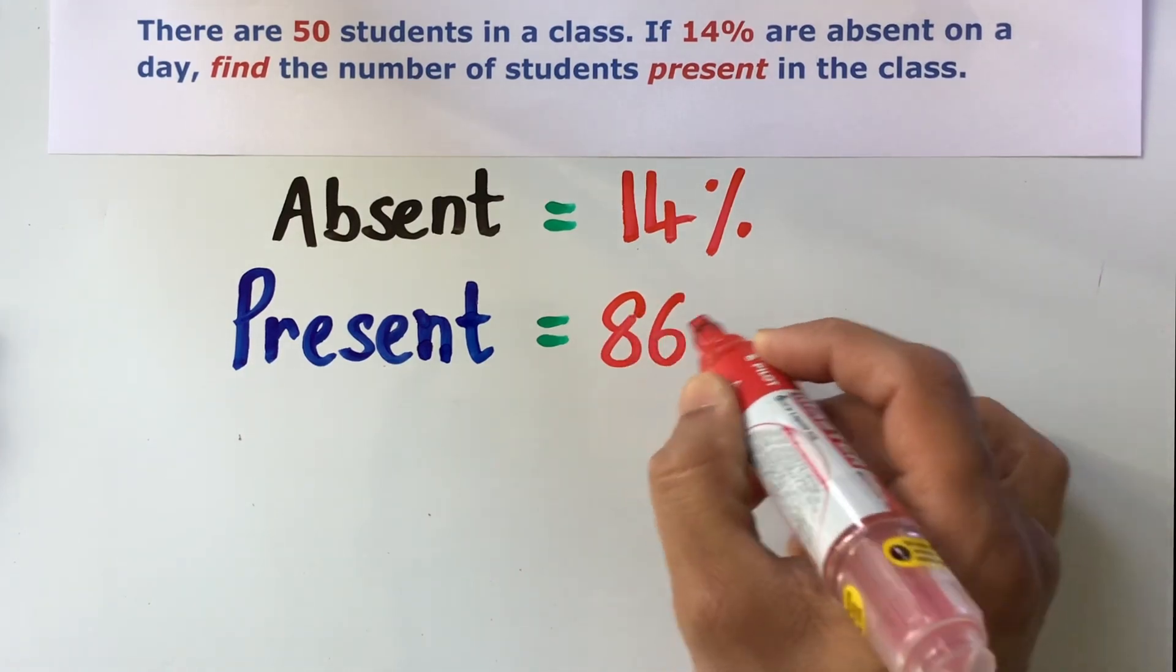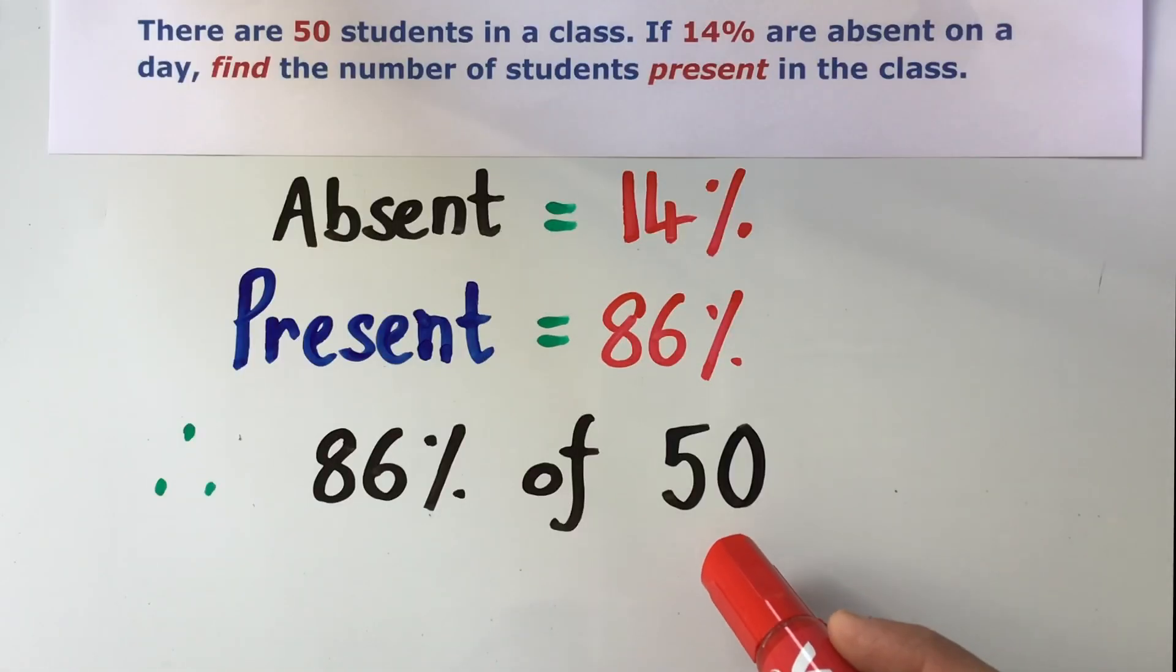we know that 86% were present on that day. Therefore, to find the number of students present, all we need to do is find 86% of 50.